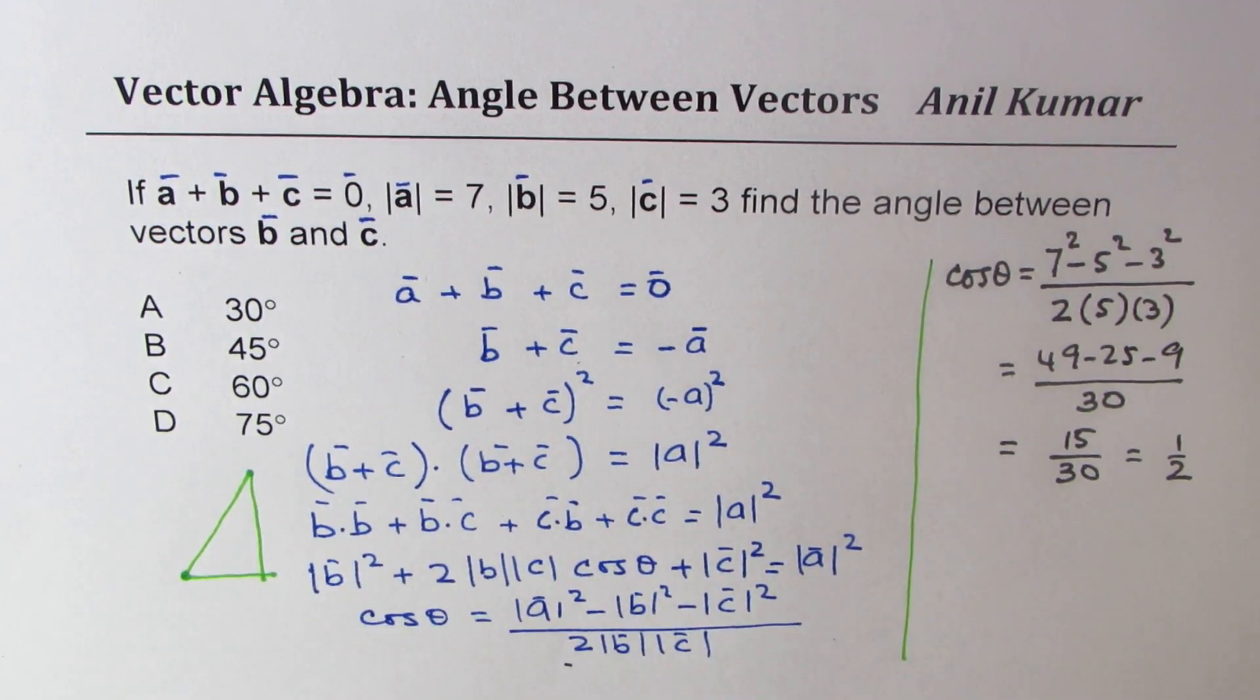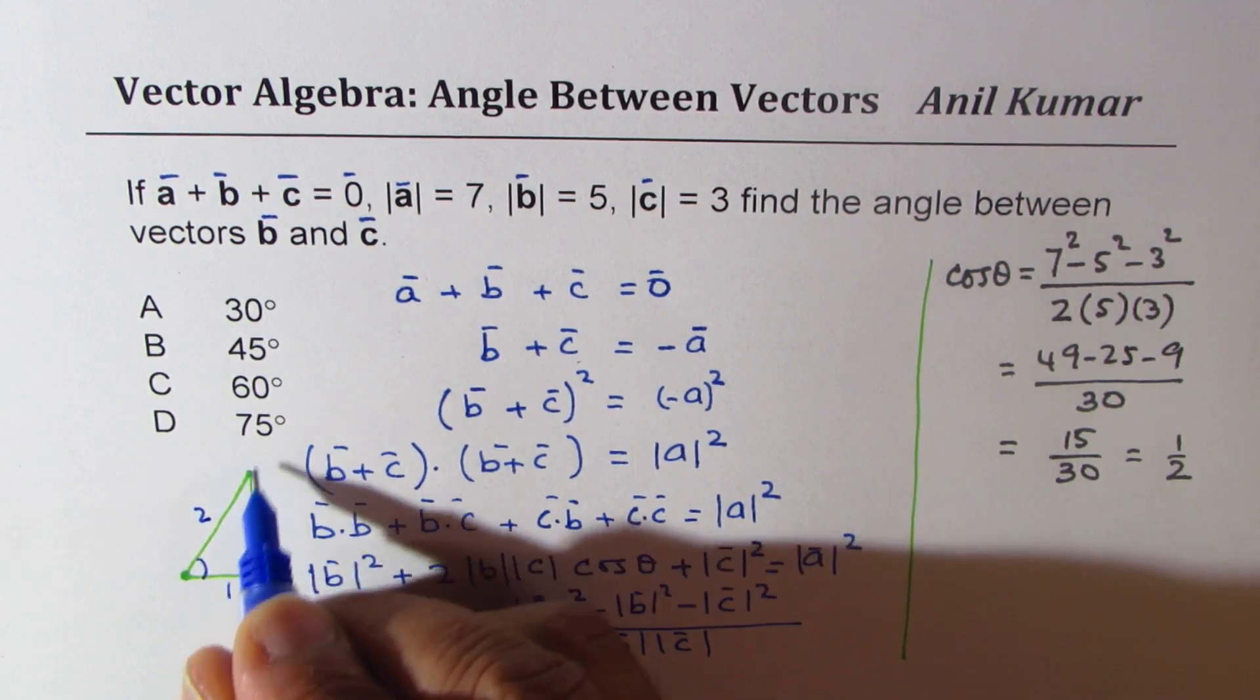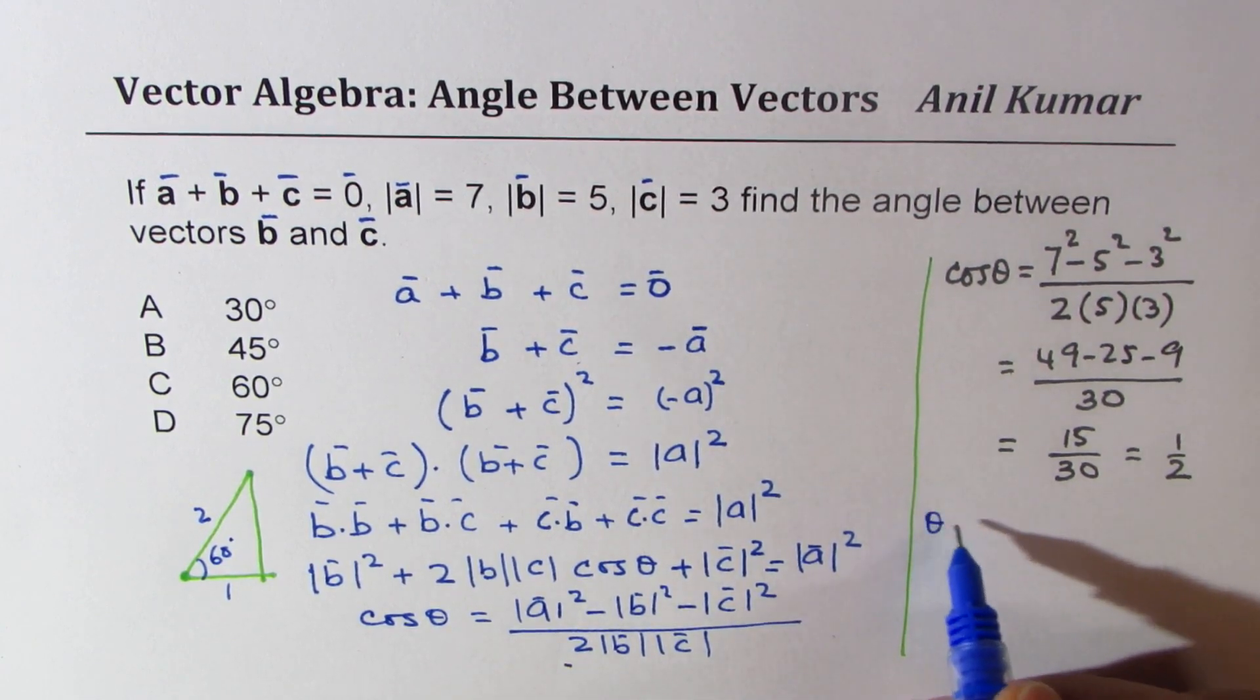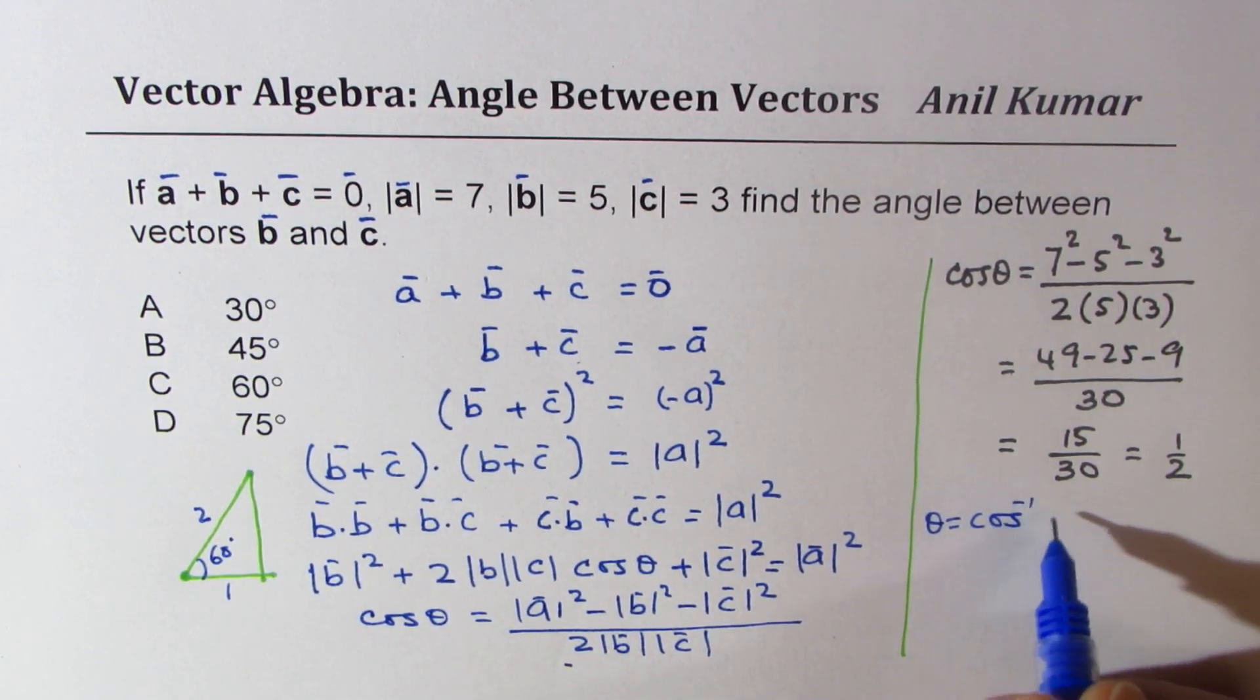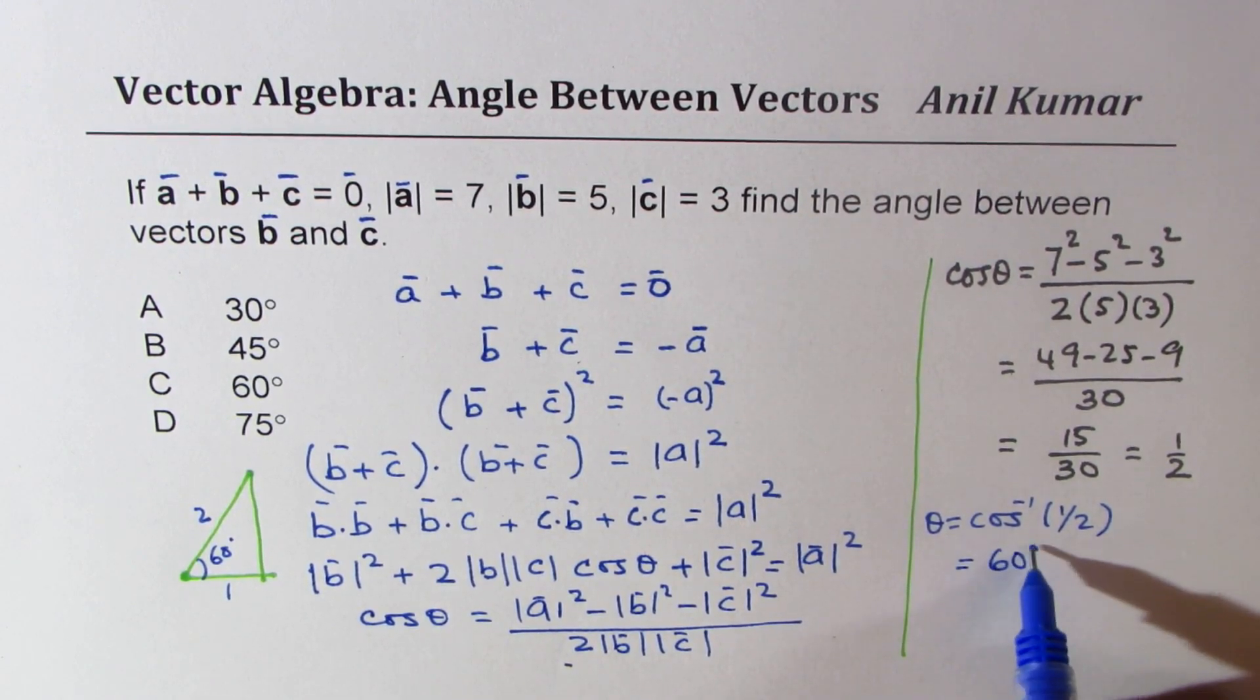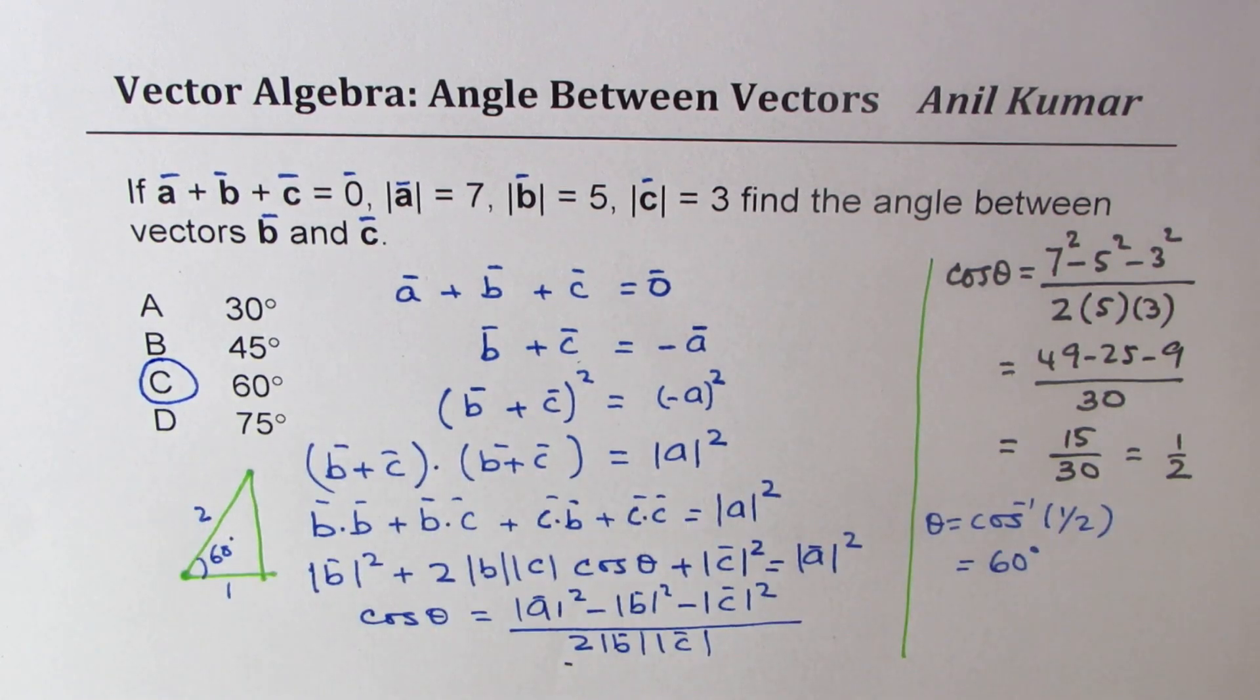We know from special triangles that cos theta equals half, which is really 1/2, for π/3 or 60 degrees. So we have theta equals cos⁻¹(1/2), which equals 60 degrees, which is option C.